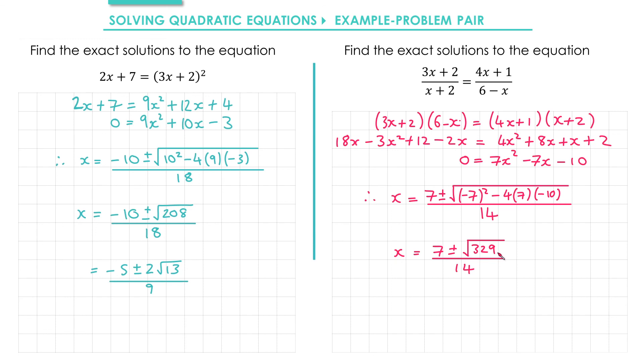Since the square root of 329 can't be simplified, that's our final answer. If at any stage you're not sure, you could simply type this into your calculator and it will simplify it for you.